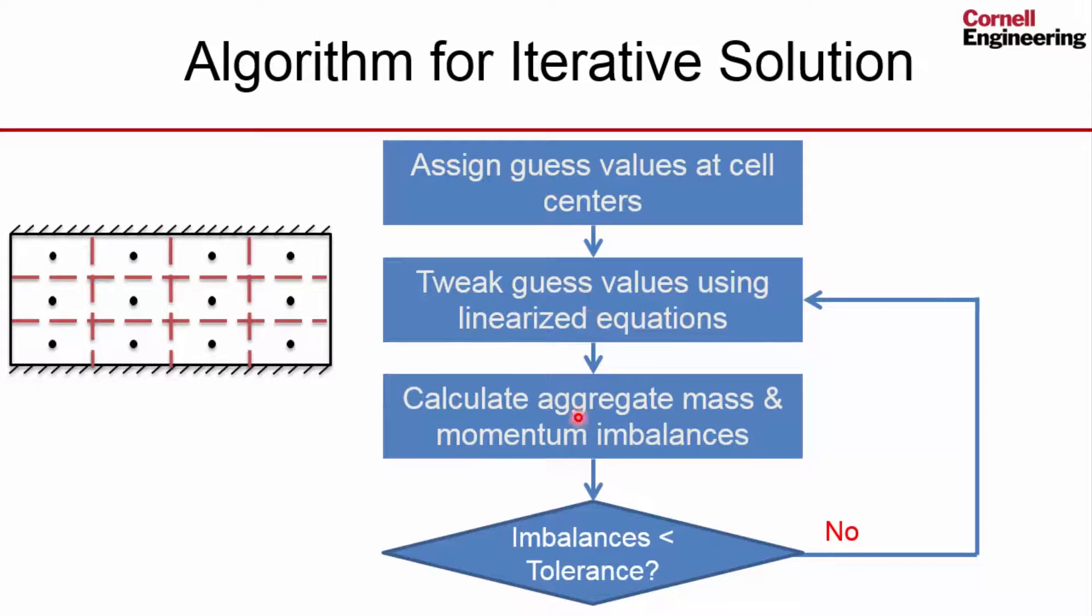And if this process converges, after some number of iterations, your imbalances for each, for mass, x-momentum, y-momentum, is going to fall below the specified tolerances.